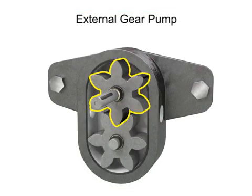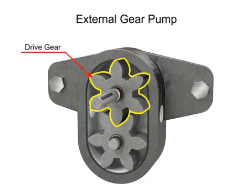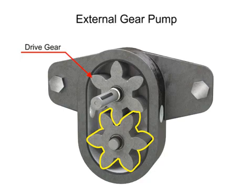One gear is driven by a motor connected to a shaft. This is called the drive gear because it is driven by a motor, and it in turn meshes with and drives the movement of the second gear.